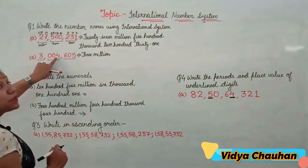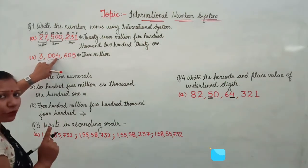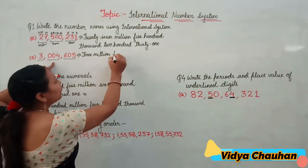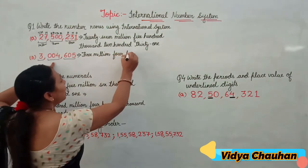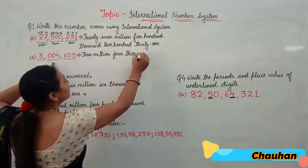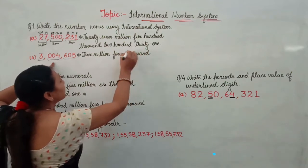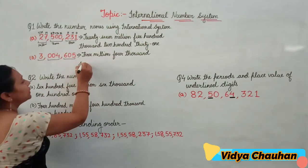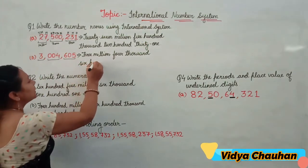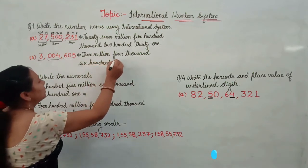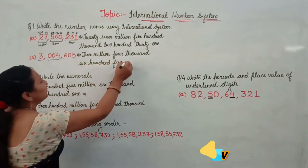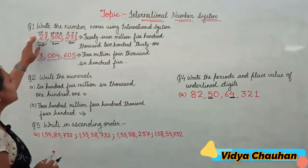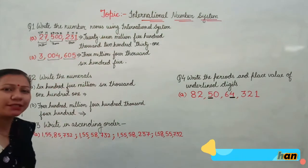In the thousands group we have 0, 0, 4 — meaning only 4 thousands. And then 605 in the ones group. So the number name is three million, four thousand, six hundred and five.